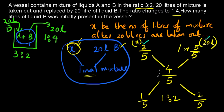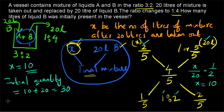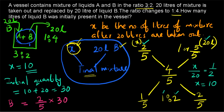Applying the rule of allegation: the difference between 4 by 5 and 1 by 5 is 1 by 5, and the difference between 4 by 5 and 2 by 5 is 2 by 5. So the final ratio is 1 is to 2. Therefore x is to 20 equals 1 is to 2, giving x equals 10. Since x is the liters remaining after 20 liters were taken out, the initial quantity is 10 plus 20 equals 30. So the initial quantity of B is 2 by 5 into 30, which equals 12 liters.